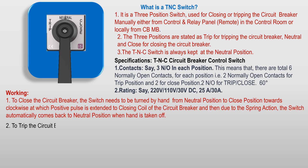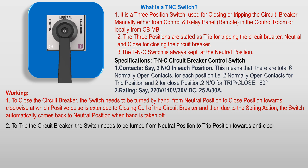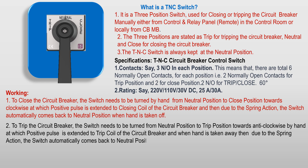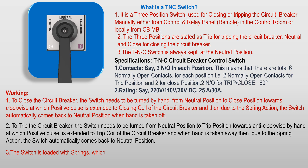To trip the circuit breaker, the switch needs to be turned from neutral position to trip position in the anticlockwise direction by hand, at which a positive pulse is sent to the trip coil of the circuit breaker. When the hand is taken away, due to spring action, the switch automatically comes back to the neutral position. The switch is loaded with springs, which ensures that it returns to the neutral end position after any operation — close or trip. This is done to send a positive pulse to the closing or tripping coils for only a short time.